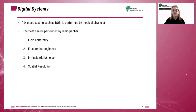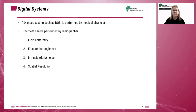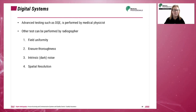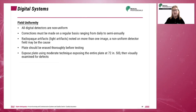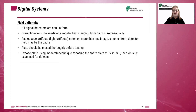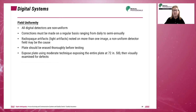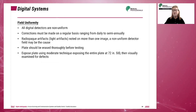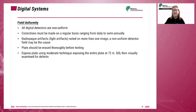This slide shows additional digital system tests that may be performed by the radiographer. According to Carol, digital detectors are all inherently non-uniform and corrections have to be made on a regular basis ranging from daily to semi-annually. Field uniformity can be tested using the listed procedure and the image visually scanned for defects. Any defects should be reported to the medical physicist.